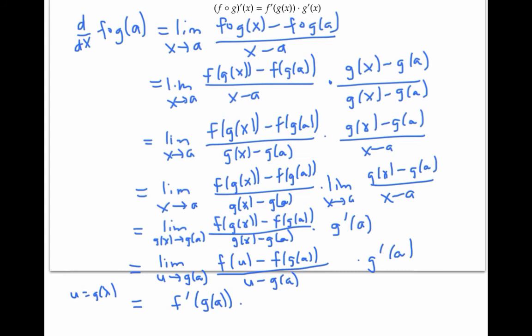And I've arrived at the expression for the chain rule. Let me just emphasize again, this is just a pseudo proof, it's not quite airtight because G of x minus G of A might be zero.